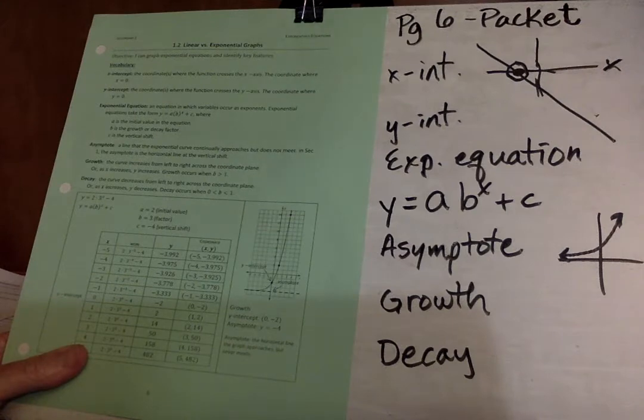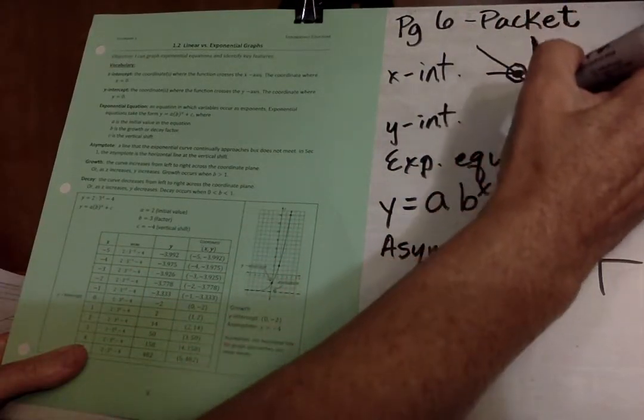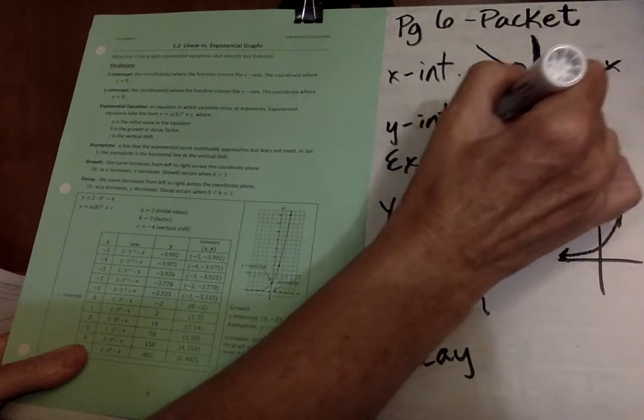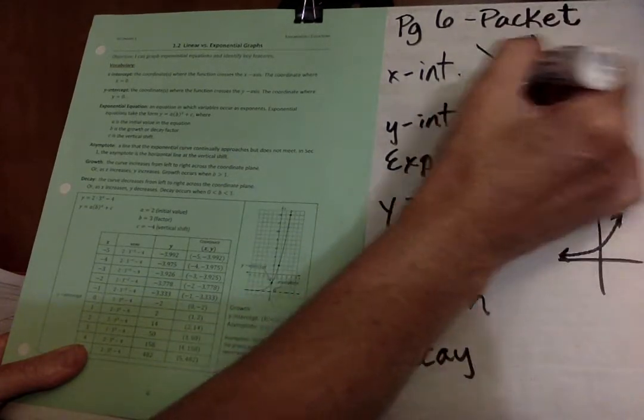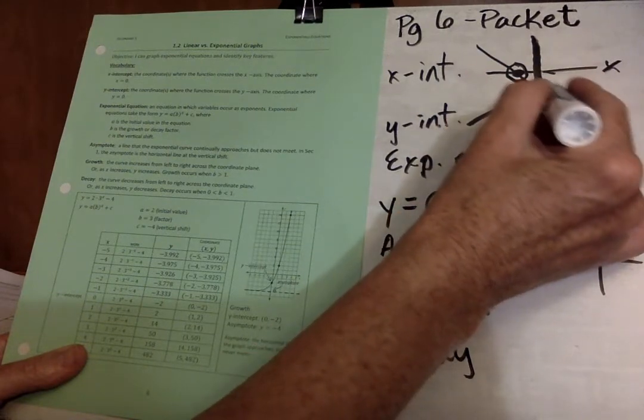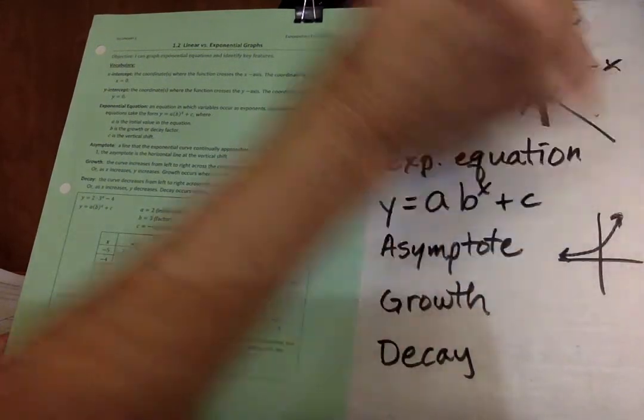Now the y-intercept is where the line crosses the y-axis or the vertical axis. So that would be here. There's the y-axis, x-axis, x-intercept, y-intercept would be that point where those two lines cross.